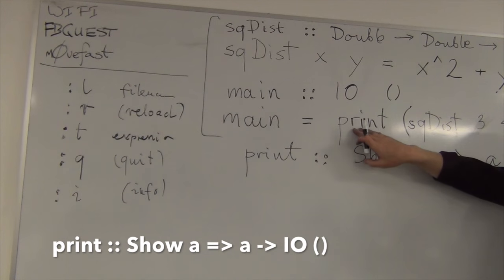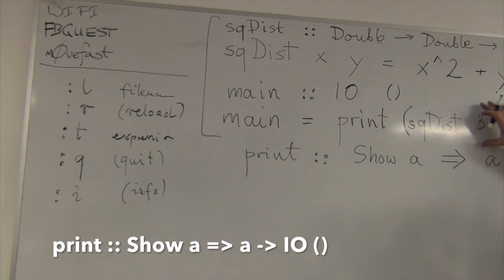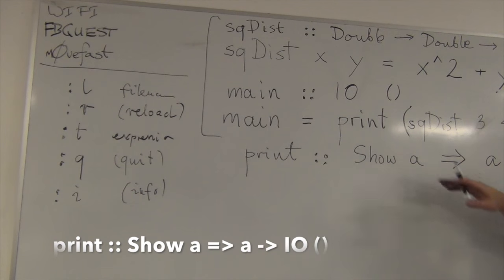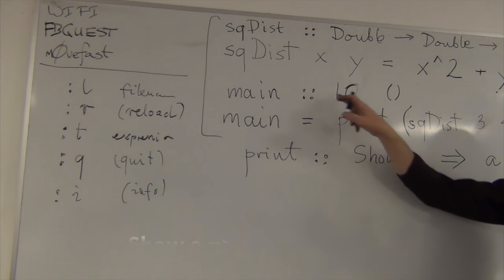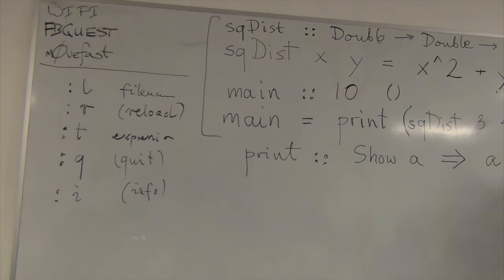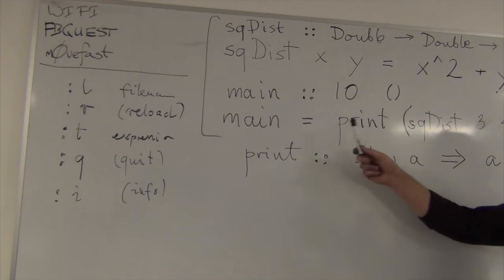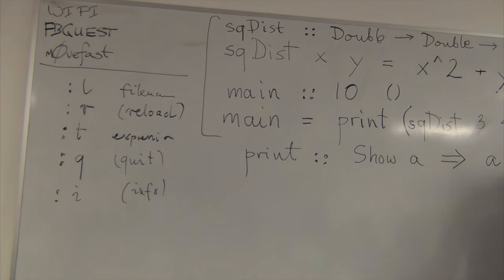Which is exactly what we need, right? We take this function, we pass it something that's showable, namely a number, a double, so we'll produce a double. So we give it a double, and it will return IO of unit, which is exactly what main is supposed to produce, IO of unit. So this is why it works.